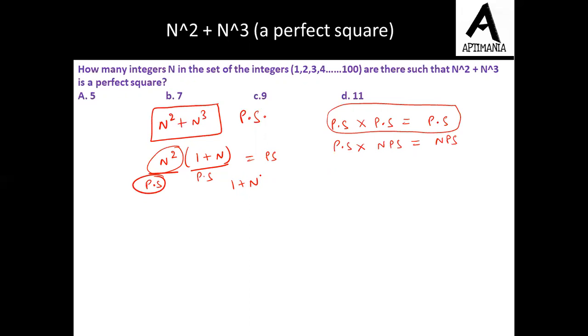So now we just need to find the values of n for which this value is a perfect square.